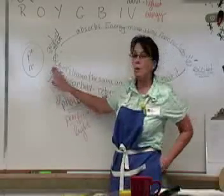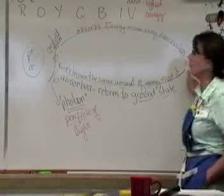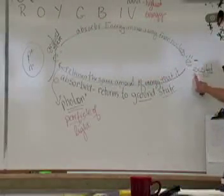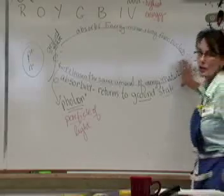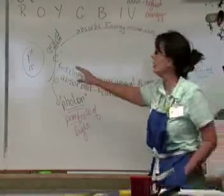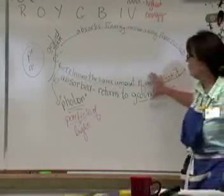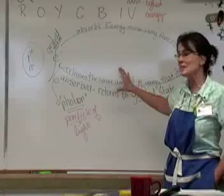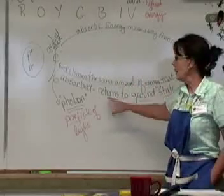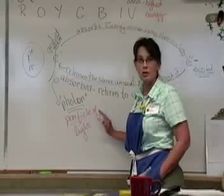So this atom will absorb energy, the electron gets excited, and it moves away from the nucleus. Now it's excited, but it has to return to the nucleus — that's called going back to ground state. So the electron is either in ground state or excited. When it returns to the nucleus, it releases the exact same amount of energy as it absorbed, but the form of the energy it releases is a photon, which is a particle of light.